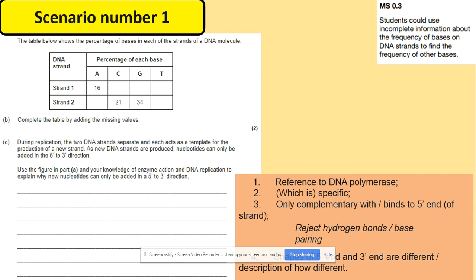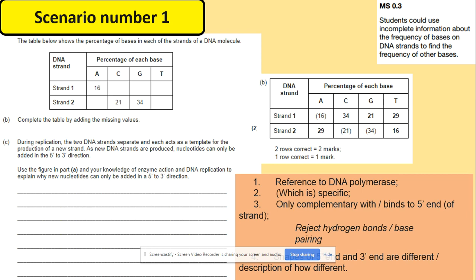The answers are 16 for adenine and 16 for thymine, because strand 2 follows the complementary base rules with strand 1 — adenine pairs with thymine, hence 16. Cytosine on the first strand pairs with guanine on the other strand, giving 21. Guanine on strand 2 pairs with cytosine on strand 1, giving 34.